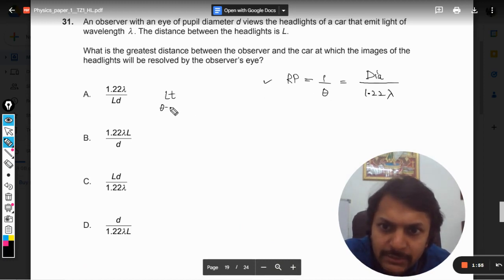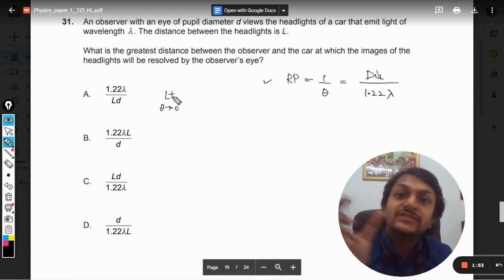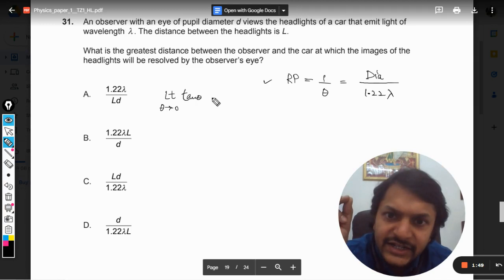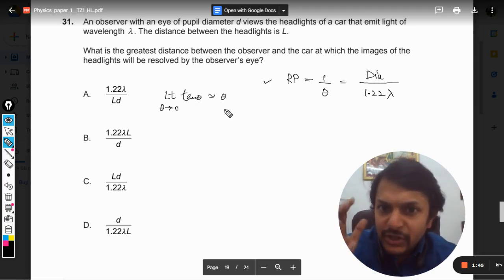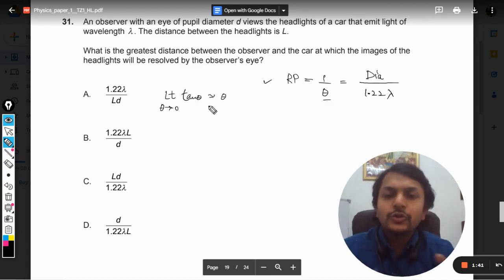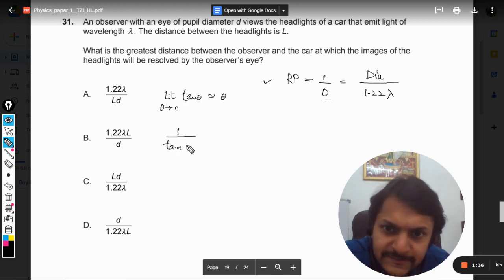In the limits, in the mathematics, we know that when theta is tending to 0, that theta is very, very small, the tangent theta is approximately equal to theta. Because the angle is very small, we can take this theta to be equal to tan theta. Our equation becomes this. Now, the diameter is given as small d, 1.22 lambda. And what is this tan theta?